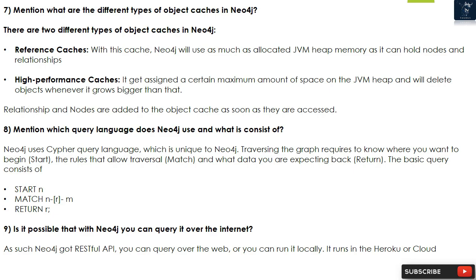Question 8: Which query language does Neo4j use and what does it consist of? Neo4j uses Cypher query language, which is unique to Neo4j. Traversing the graph requires knowing where you want to begin (start), the rules that allow traversal (match), and what data you are expecting back (return).